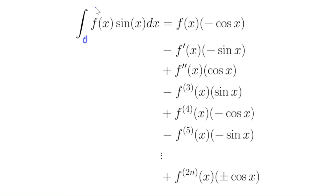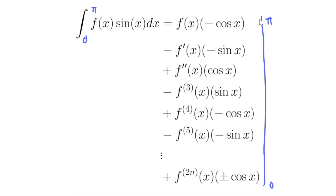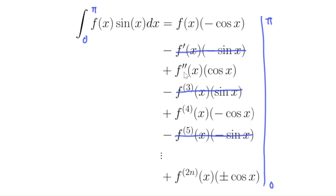We want to do the definite integral from zero to pi. All the terms with sine of x drop out because sine of zero is zero and sine of pi is zero. Cosine of zero is one and cosine of pi is minus one, so all these cosines are either plus one or minus one. Our goal is to show this whole thing is an integer — so if we can show that f and all its derivatives up to order 2N give integers when you plug in 0 and when you plug in pi, then this whole thing will be one big integer: just a sum and difference of integers.